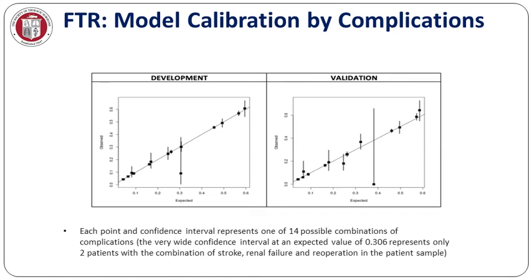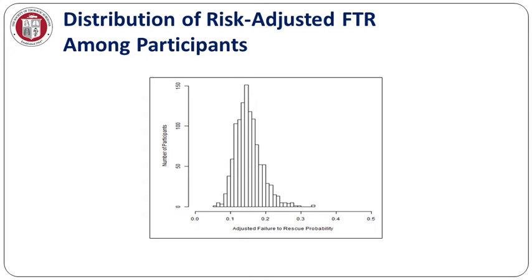For complications, each point and confidence interval represents one of 14 possible combinations of complications. The very wide confidence interval at an expected value of 0.36 represents only two patients with the combination of stroke, renal failure, and re-operation in the patient sample. There was a wide distribution in failure to rescue across sites, enabling us to use this metric to distinguish amongst sites. Similar to our star ratings, we can readily identify both positive and negative outliers.